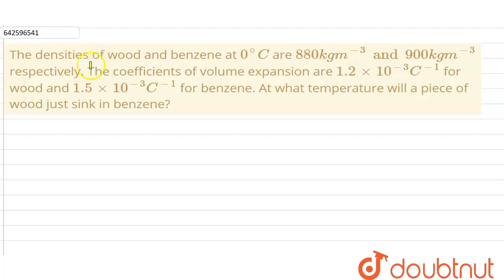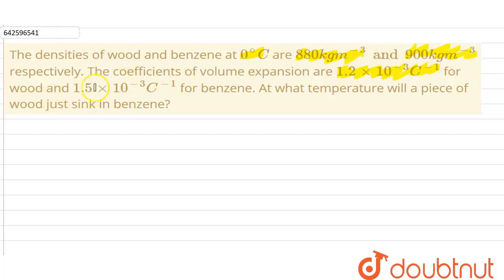Hello everyone. Our question is: the densities of wood and benzene at 0°C are 880 kg/m³ and 900 kg/m³ respectively. The coefficient of volume expansion are 1.2×10⁻³ per °C for wood and 1.5×10⁻³ per °C for benzene. At what temperature will a piece of wood just sink in benzene?